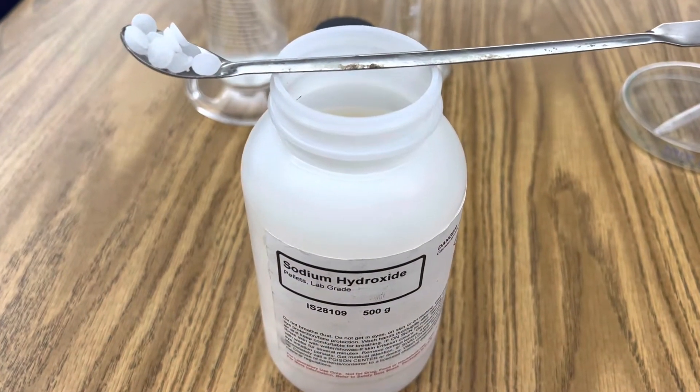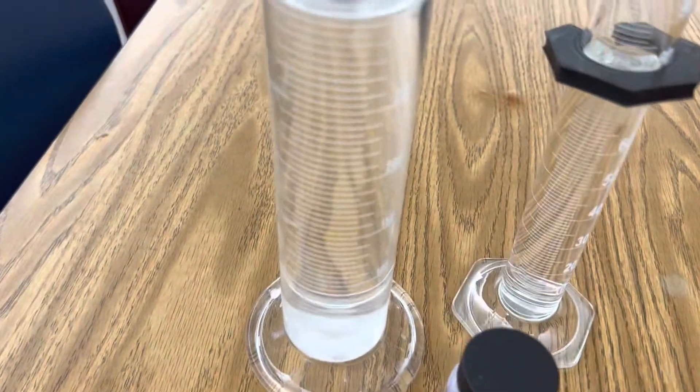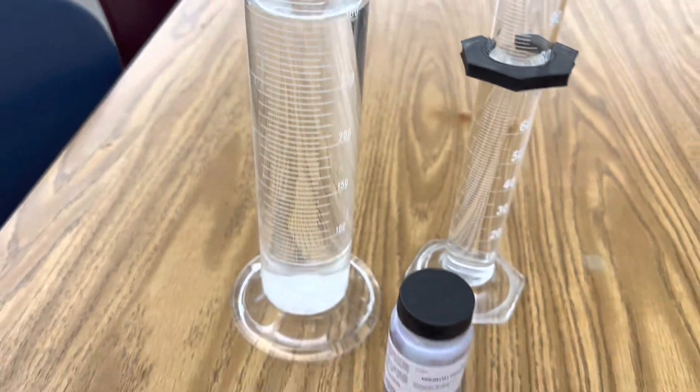Begin by making an aqueous solution of sodium hydroxide by adding 6 grams of sodium hydroxide to 300 milliliters of distilled water.